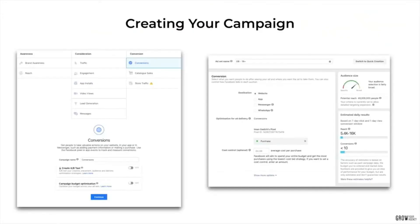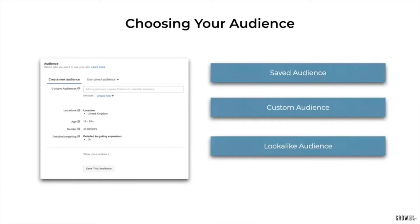In terms of creating your campaign, go back to Ads Manager, choose a conversion objective, give it a name, and click through. This is where you'll let Facebook know which conversion you'd like the campaign to optimize for. Next, scroll down and choose your audience. Facebook offers three types of audiences. The most common is saved audiences, where you choose targeting based on interests, demographics, and locations. You can create one for each ad or save one to reuse again and again.